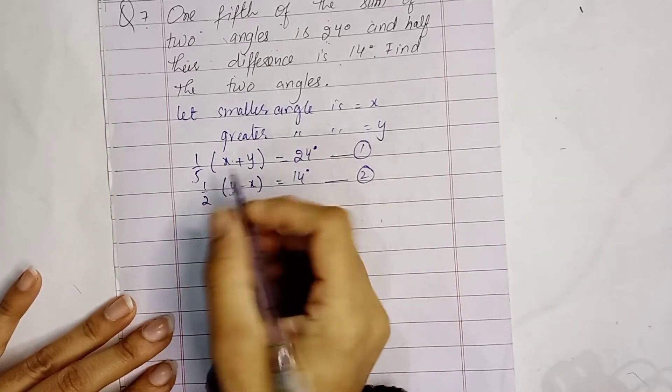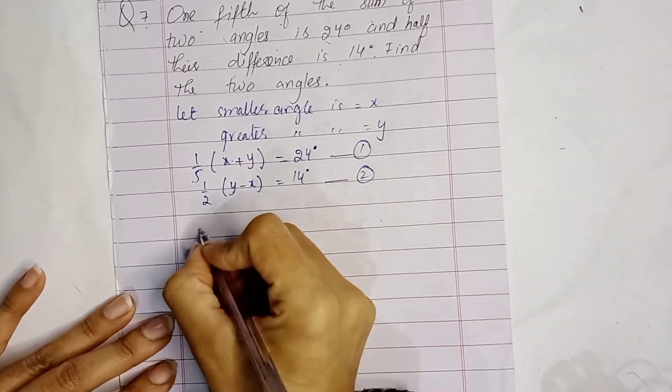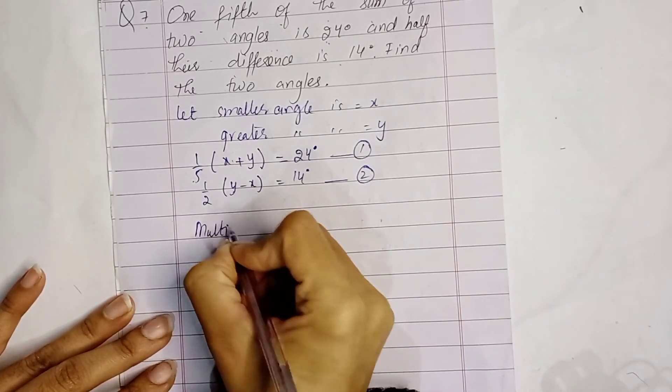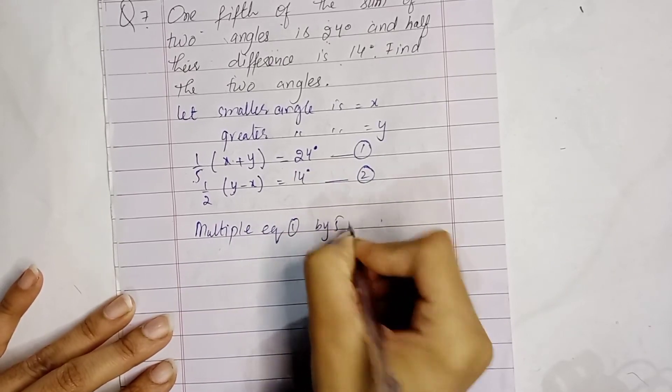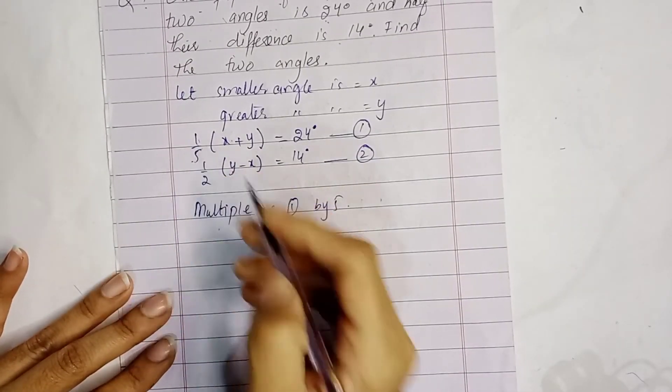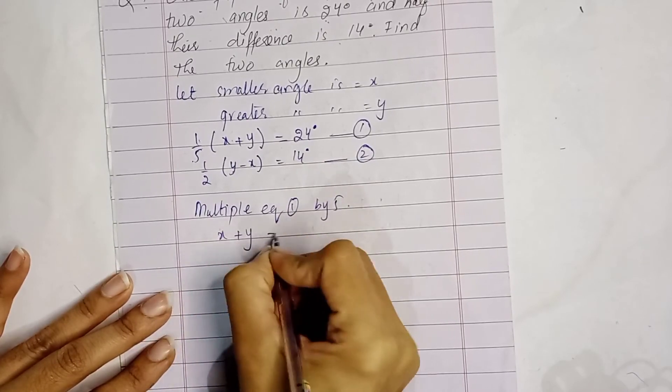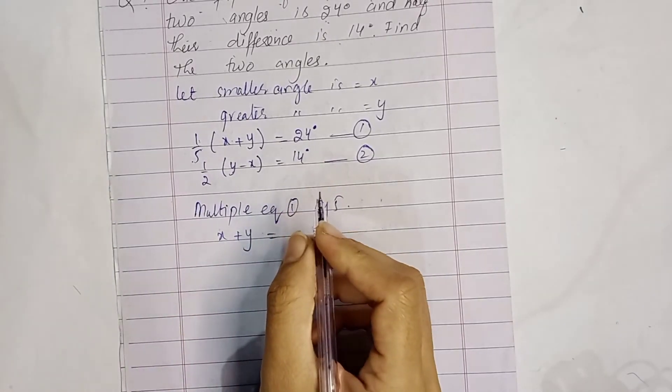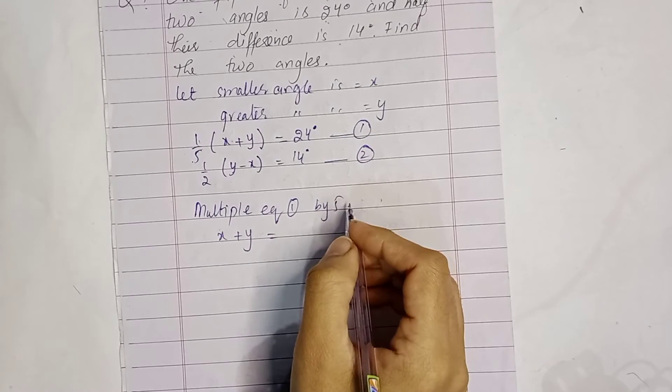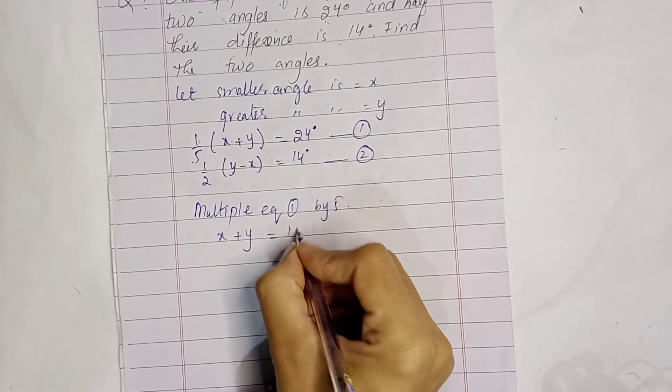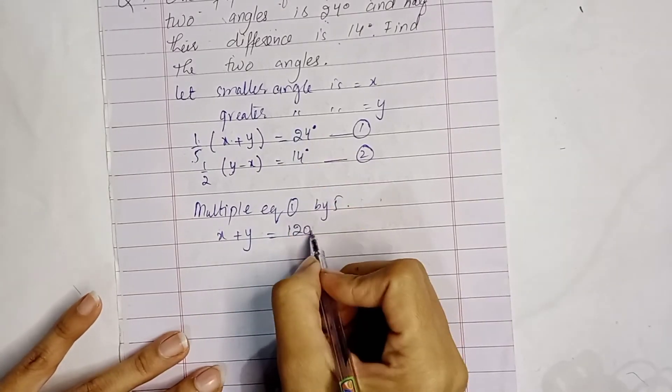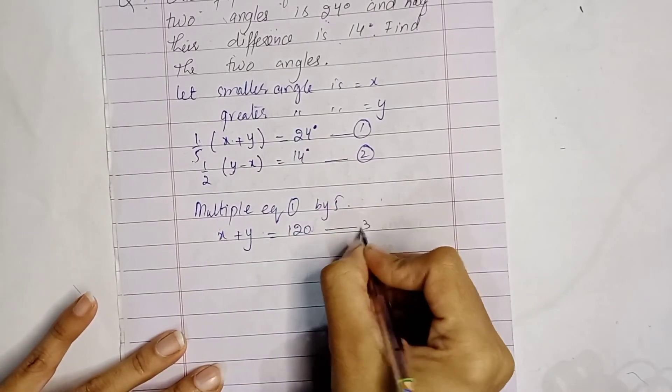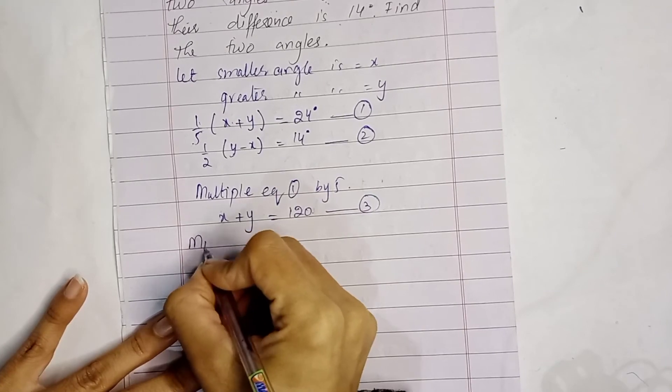One fifth of the sum of two angles is 24 degrees: x plus y over 5 equals 24. Half their difference is 14: y minus x over 2 equals 14. This is equation number 1 and equation number 2. Now we will eliminate these fractions. Multiply equation 1 by 5: x plus y equals 120.